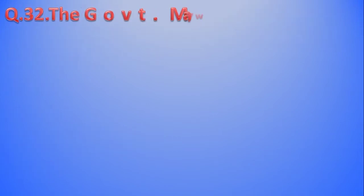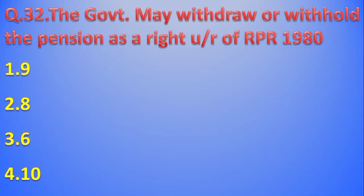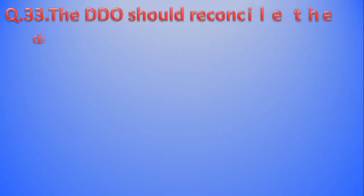Question 32: The Government may withdraw or withhold the pension as a right under which Rule of Revised Pension Rules 1980? As per RPR 1980, Rule 9, the power to withhold or withdraw pension is vested in the Government. The answer is Option 1 - Rule Number 9. Question 33.